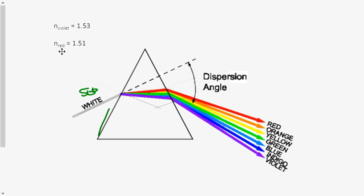For instance, we're going to look at red, which is 1.51, and violet, which is 1.53. So it's the two extremes here, and then there will be angles in between.